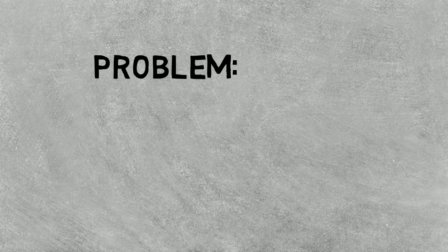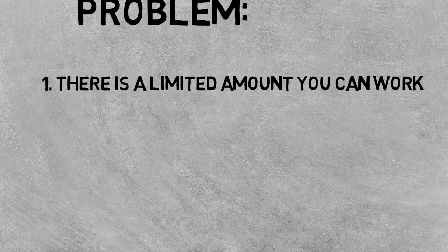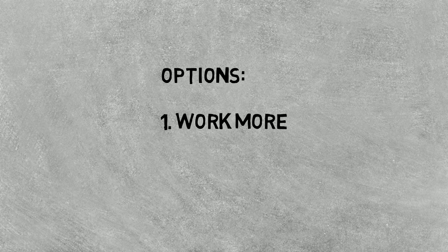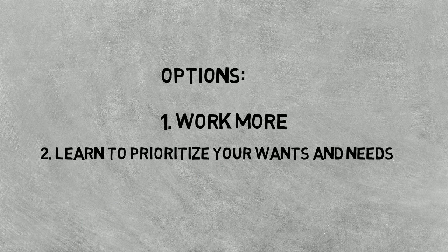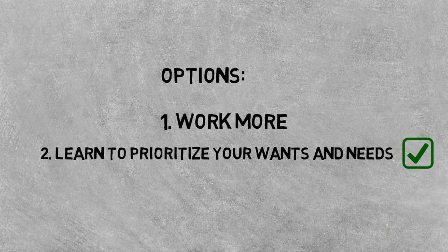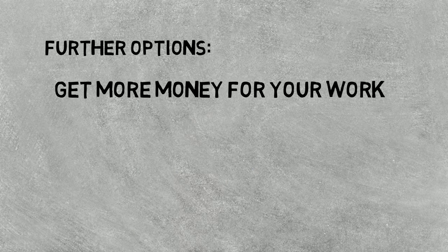Here's your problem: there's a limited amount that you can work, therefore sometimes you can't cover all of your wants and needs. So one option is to work more, and the other option is to learn to prioritize your wants and needs. This is one of the essential skills of adulting.